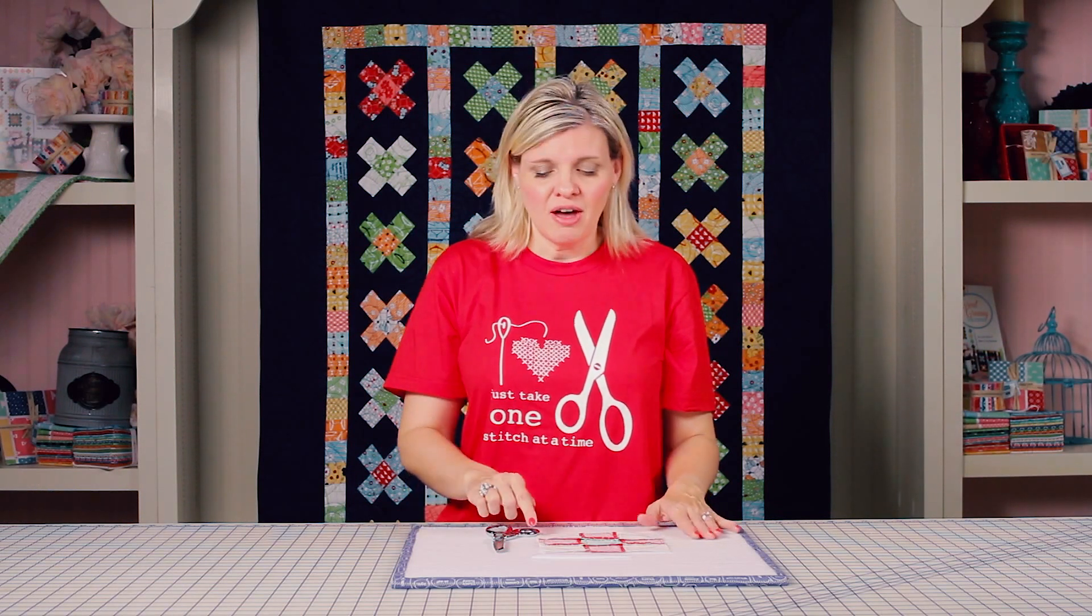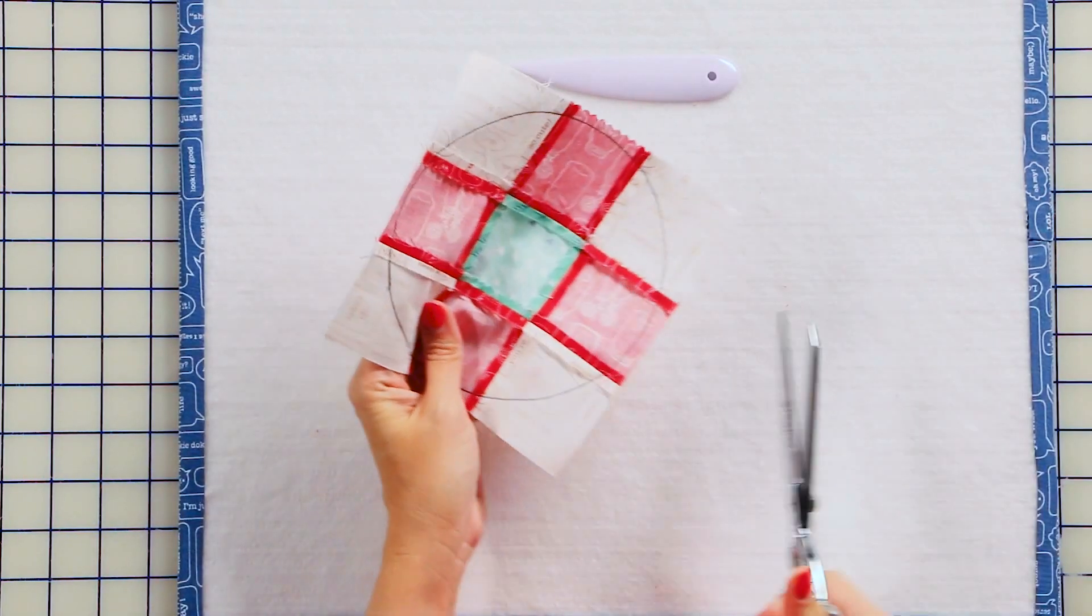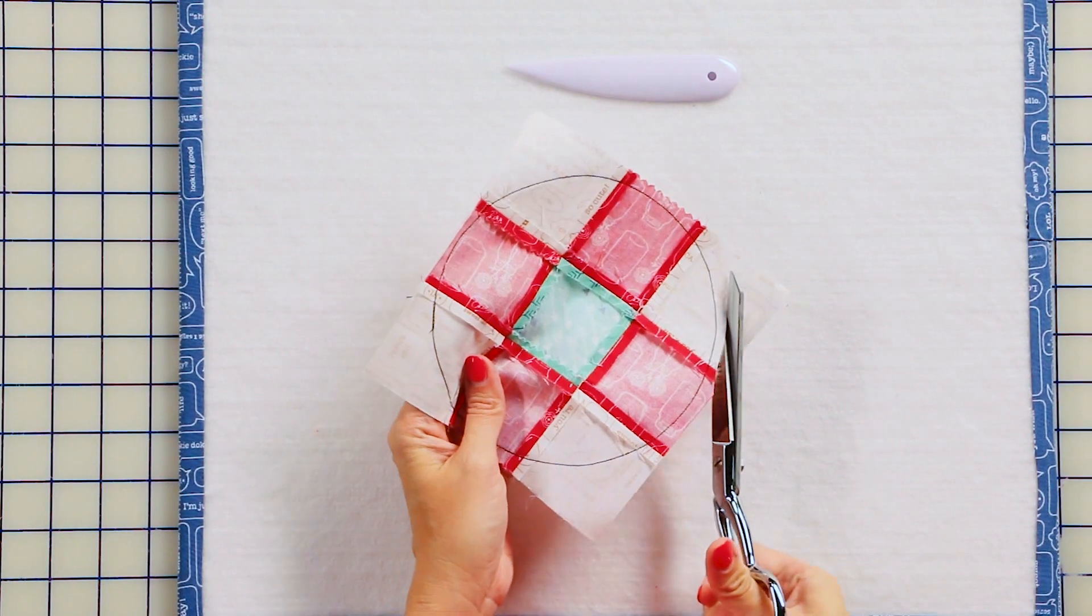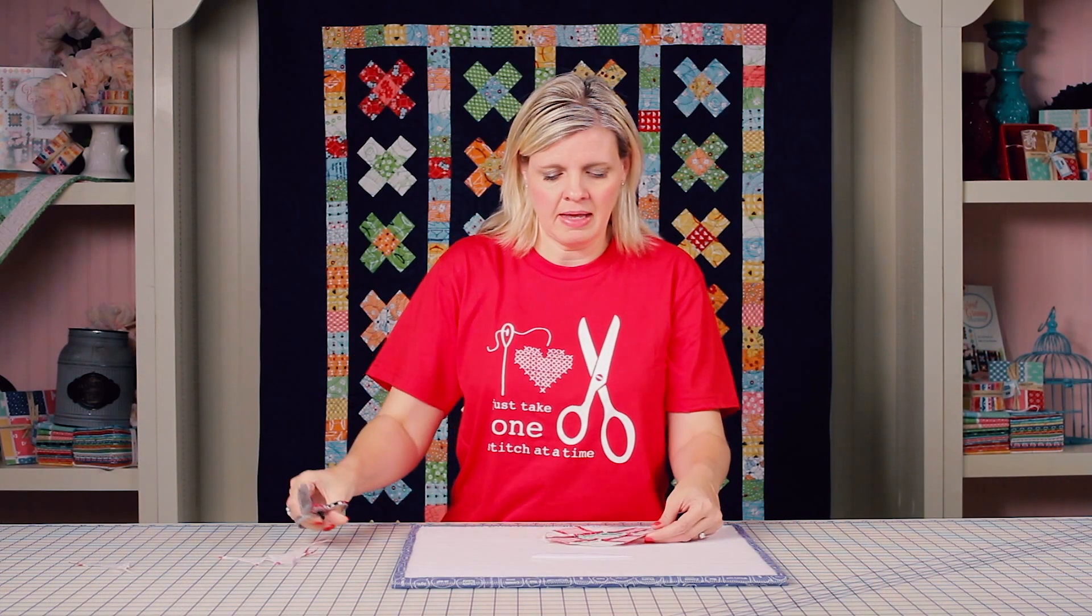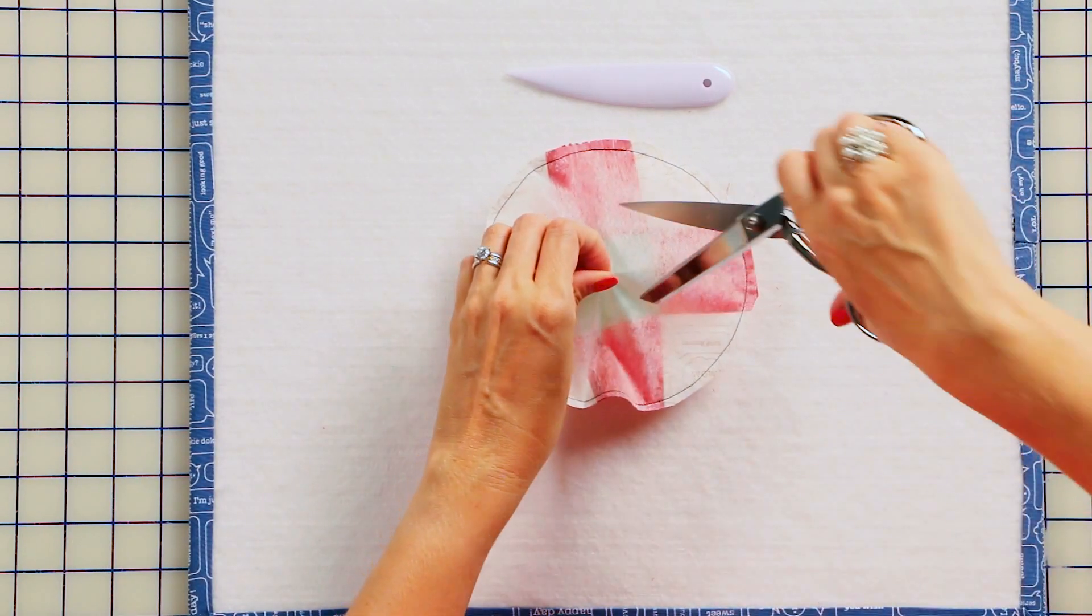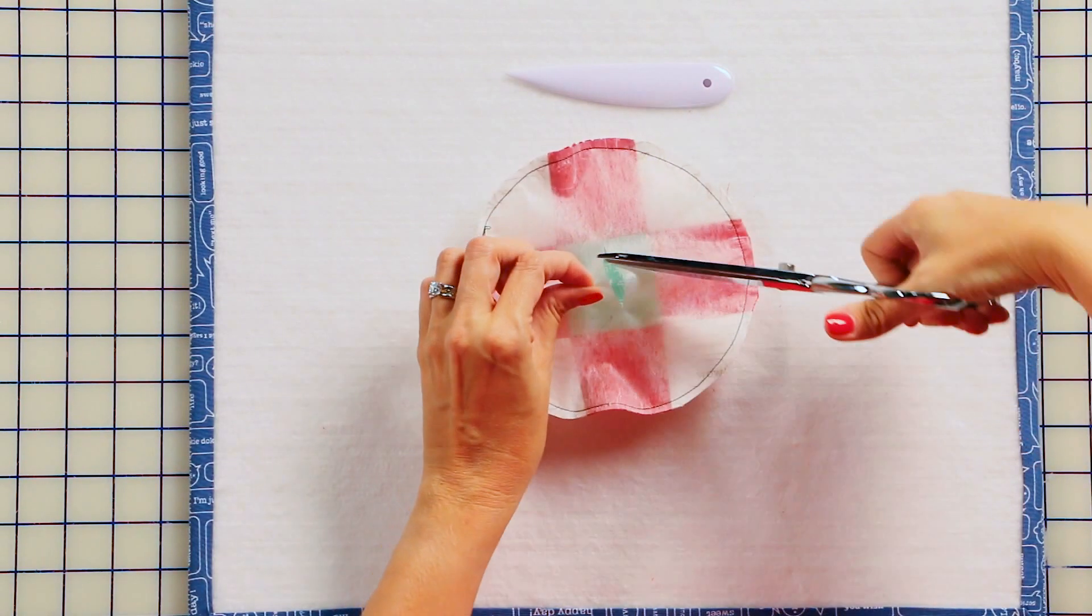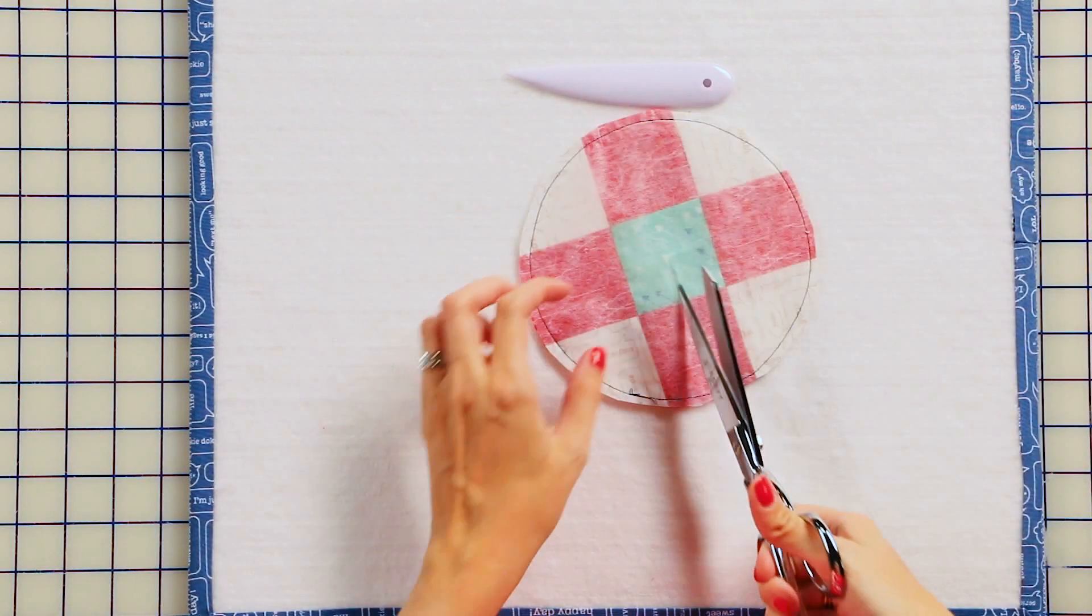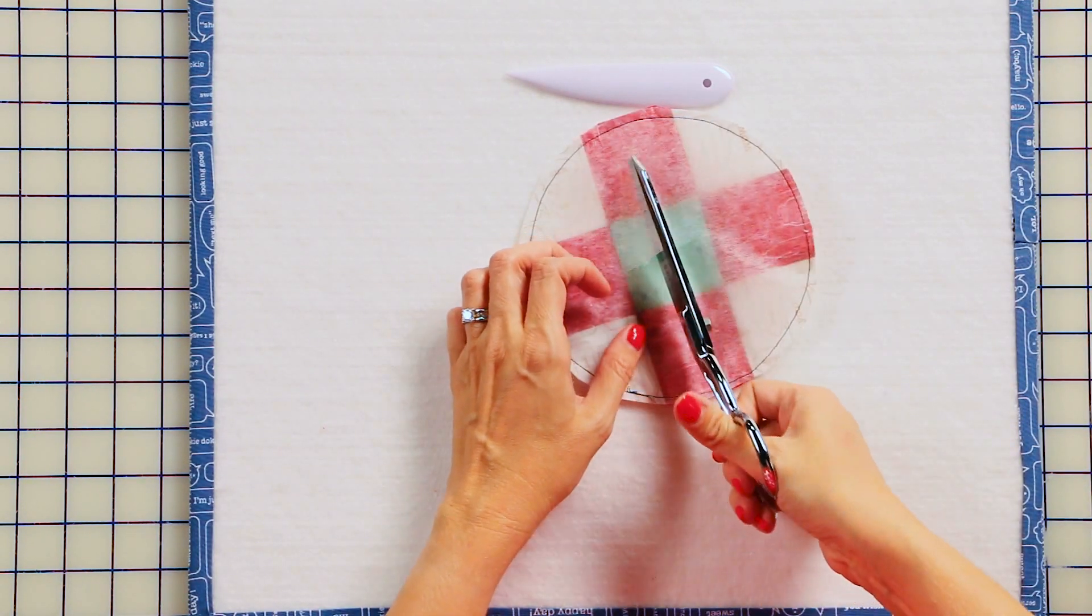Now we're going to trim our block. First, we're going to trim a quarter inch away from the edge of your stitches. Now on the back, where the Pelon is, you're going to make two snips, one this way, one this way.